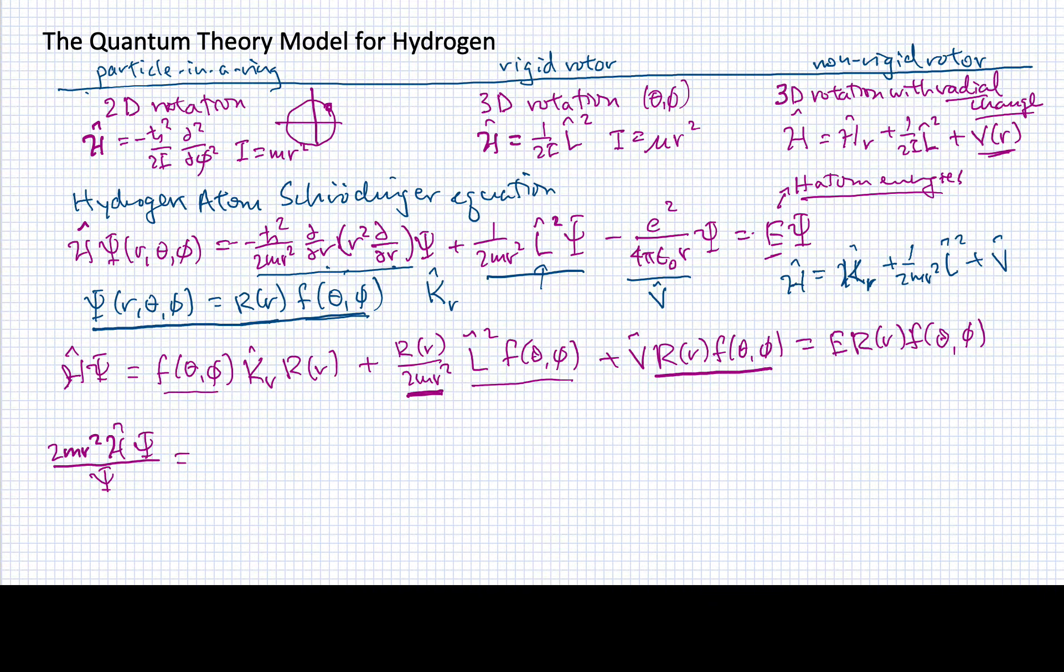When I do all of that, I'll divide out this f and have 1 over the r. I'll have 2mr squared over r times the kinetic energy operator operating on the r.